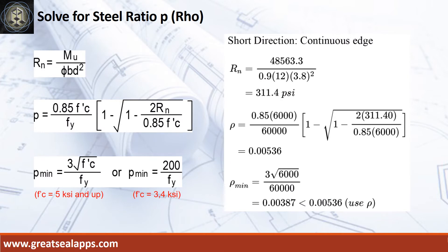Given short direction, continuous edge moment equals 48,563.3 inch-pounds. Resistance factor equals 0.9, b equals 12 inches, and d equals 3.8 inches. The beam design ratio RN equals 311.4 PSI and reinforcement ratio rho equals 0.00536.